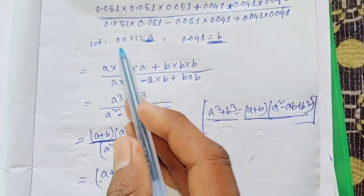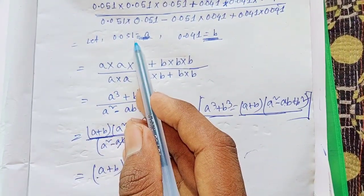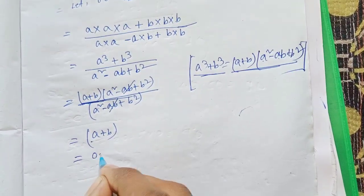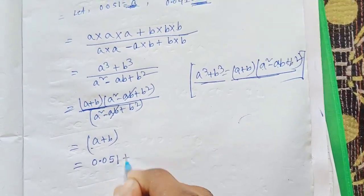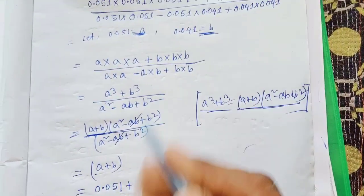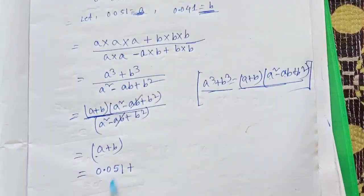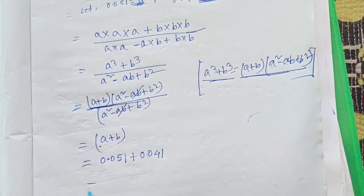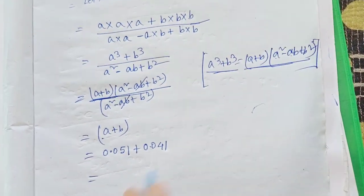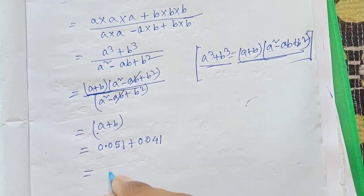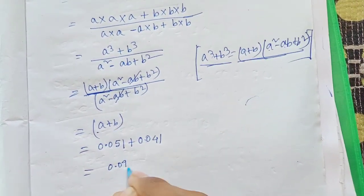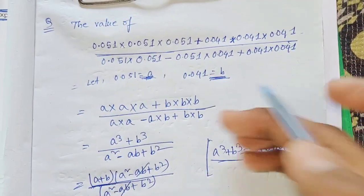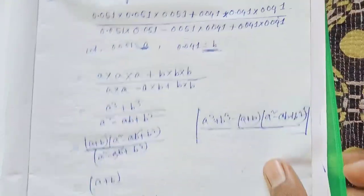After cancellation we are left with a + b. The value of a is 0.051 and b is 0.041, so 0.051 + 0.041 = 0.092. That's the answer — very simple!